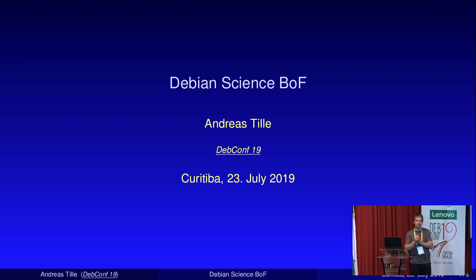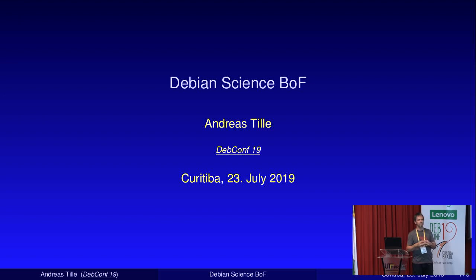What is Debian Science? Debian Science is a Debian Pure Blend. Debian Pure Blends are subsets of Debian — pure means pure subsets, so nothing is outside, everything is inside — which is covering a certain topic. At this DebConf is the maintainer and founder of Debian Astro, which is a team covering astronomy.